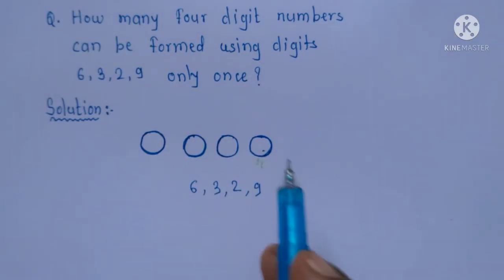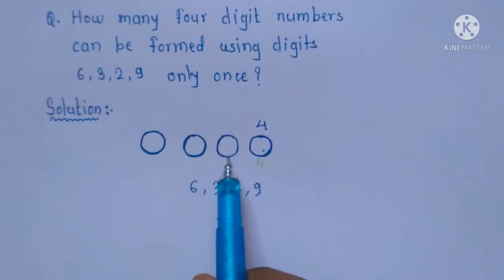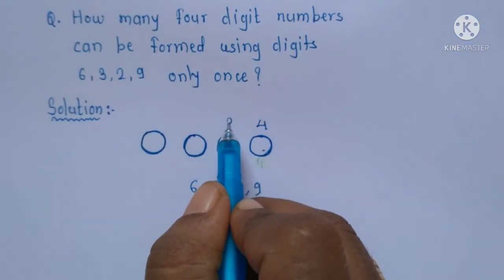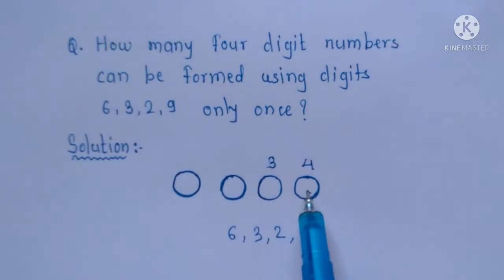Now, we already filled one digit here, so we have only three digits now. So to fill this second circle, we have only three digits.